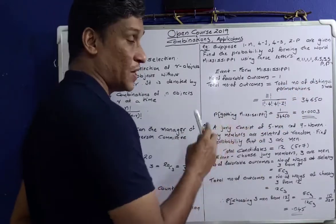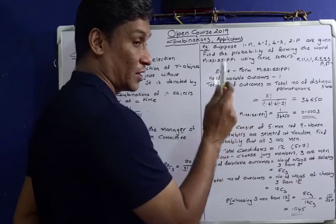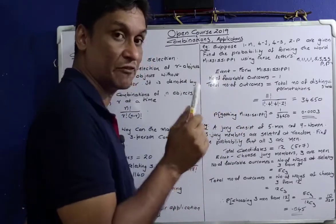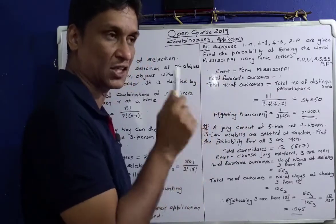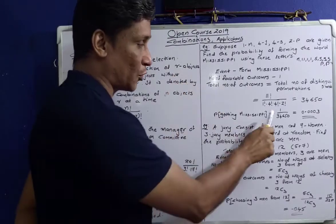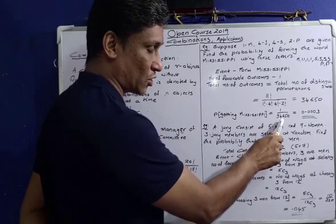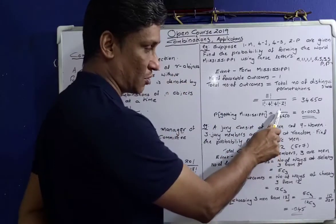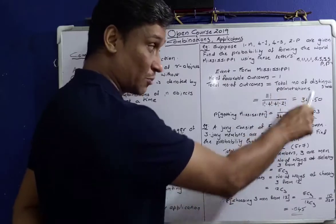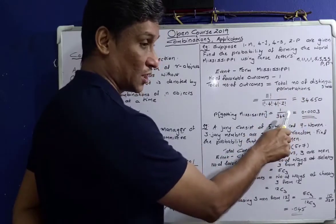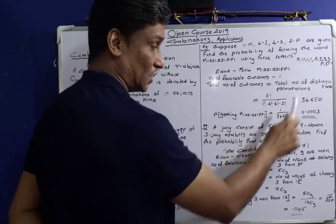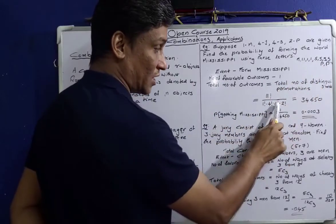The probability of getting Mississippi: Mississippi is the favorable outcome, and there is one favorable outcome. Total number of favorable outcomes divided by total number of outcomes. Number of favorable outcomes is 1; total number of outcomes is the number of permutations of these objects.